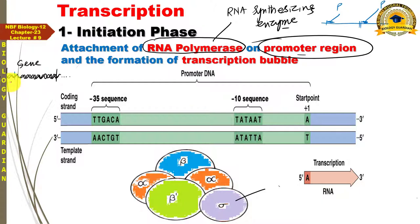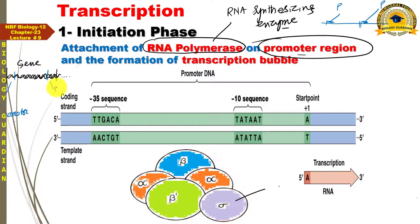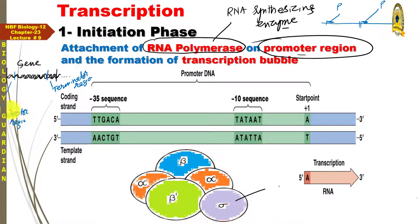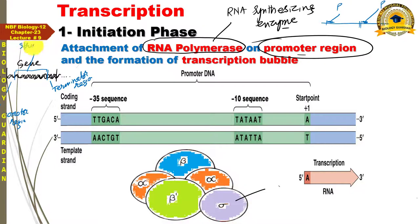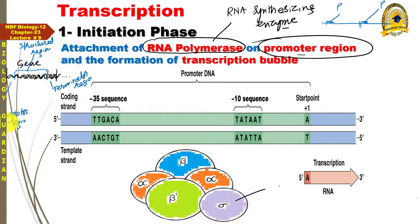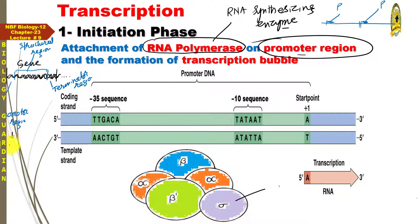Gene کے تین regions: promoter region، terminator region، اور structural region۔ Promoter اور terminator یہ دونوں gene کی expression کو control کرتے ہیں - یہ regulatory regions ہیں۔ Promoter یہ gene expression کو initiate کرتا ہے - یعنی RNA polymerase وہاں پر attach ہوگا۔ It controls the initiation of gene expression۔ Terminator region یہ gene expression کو stop کرتا ہے - یعنی transcription کا آغاز promoter کے ذریعے اور اختتام terminator کے ذریعے۔